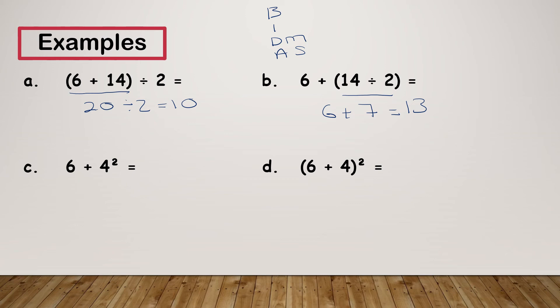6 plus 4 squared — 4 squared is an index, so I need to do my index first. 4 squared means 4 times 4. I do have another video on square numbers if you're not happy with those. 4 squared is 16, and 6 plus 16 gives me 22. Finally for this page: bracket 6 plus 4 end bracket squared. I need to do what's in the bracket first. Because the squared symbol is outside the bracket, that means I'm squaring everything inside, so this actually says 10 squared, because 6 plus 4 gives me 10, and 10 squared gives me 100.